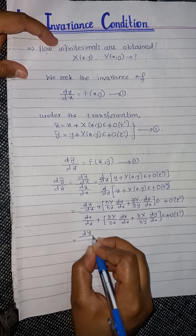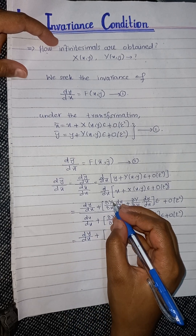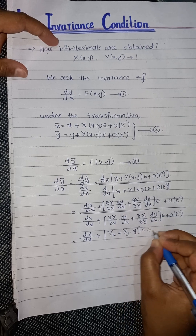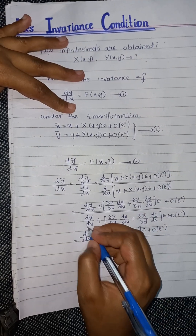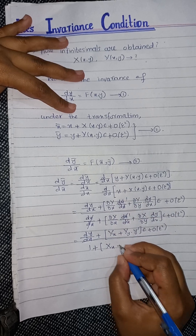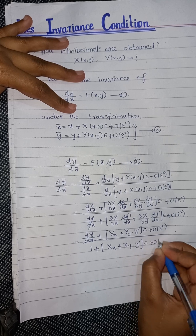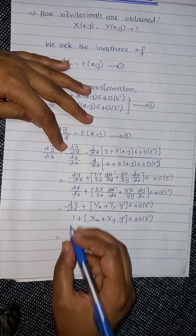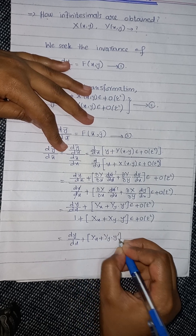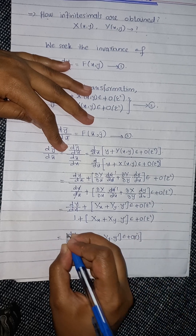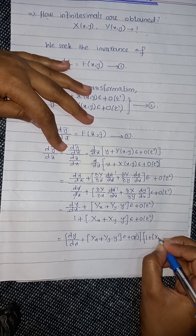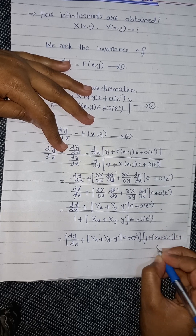So the numerator becomes dy/dx + [Y_x + Y_y · y']·ε + O(ε²), and the denominator becomes 1 + [X_x + X_y · y']·ε + O(ε²). Taking the numerator and multiplying by the denominator raised to the power of negative 1, we apply the binomial expansion.